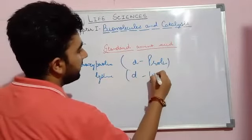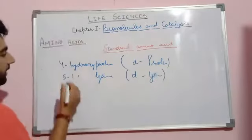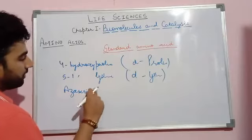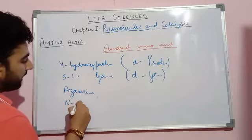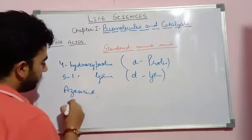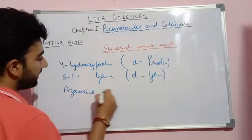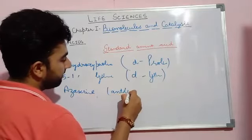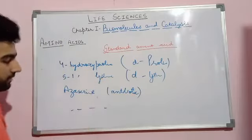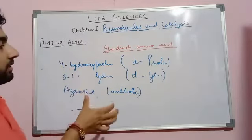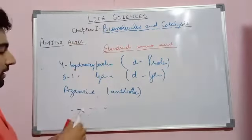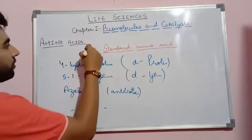There are more examples of non-standard amino acids, such as azaserine, which acts as an antibiotic, and many more. These amino acids are essentially derivatives or modifications of standard amino acids, and that is why they are known as non-standard amino acids.